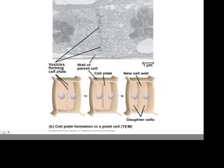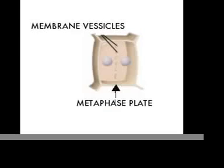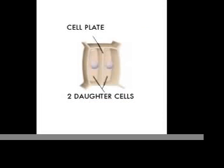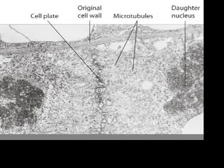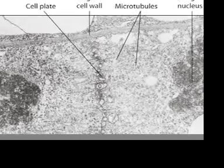But in a plant cell, this process is a little different. Membrane vesicles form at the metaphase plate and come together to form the cell plate, providing two daughter cells. Cellulose is then laid down on both sides of the plate to form walls between the two new cells. That's my update.